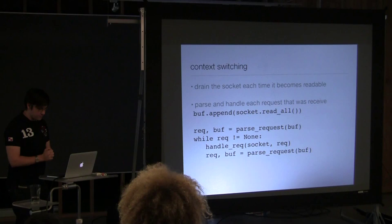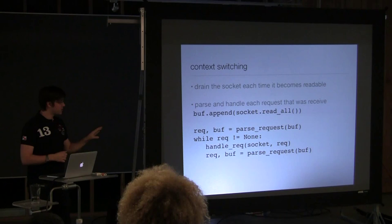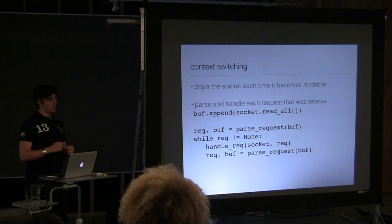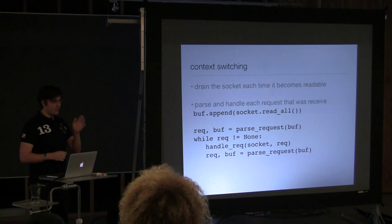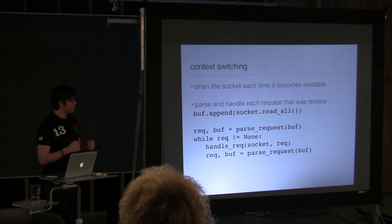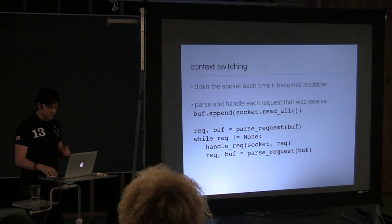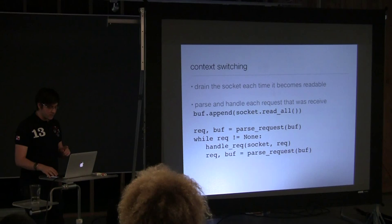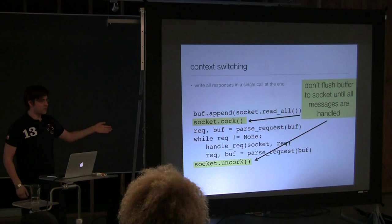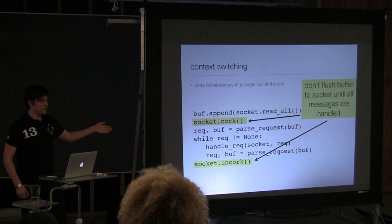And actually you can take this one step further. Inside handle the request, you're likely to maybe respond to this request somehow. Maybe you're writing something to the socket. And writing to a socket is a system call and it's a context switch. So that means for every request you will actually context switch into the kernel to write something to the socket, come back again, handle the next request, context switch into the kernel to write something more to the socket, come back. So you can actually improve that as well by corking the socket and then once you're done handling all of them, that's when you uncork and actually flush the things. I assume cork is self-explanatory. There's an actual extension in Linux to do this on the socket as well, but it's easy to do in your user space send buffer.